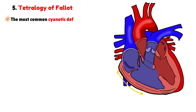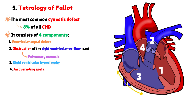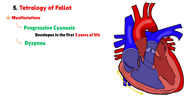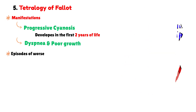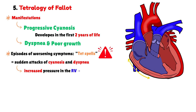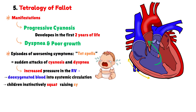Now let's talk about the Tetralogy of Fallot. This is the most common cyanotic defect, representing up to 8% of all congenital heart disease cases. As its name suggests, it consists of four components: a ventricular septal defect, obstruction of the right ventricular outflow tract which is usually a pulmonary stenosis, right ventricular hypertrophy, and finally, an overriding aorta, which receives blood from both ventricles. Clinically, patients present with progressive cyanosis, which usually is not present at birth but develops during the first two years of life. Other potential symptoms are shortness of breath and poor growth. Episodes of worsening symptoms, known as Tet spells, are sudden attacks of cyanosis and dyspnea, caused by a rise in right ventricular pressure, which increases the flow of deoxygenated blood into systemic circulation. They often occur during crying or agitation, and children instinctively squat to raise systemic vascular resistance, pushing more blood to the lungs and relieving cyanosis.